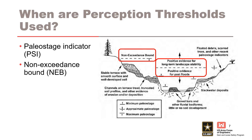In USACE and USBR, paleoflood studies are routinely performed for higher level dam safety studies. The analytical paleoflood analysis approach uses field identification of geologic and geomorphic evidence of large past floods. The graphic shown here provides examples of features commonly used in paleoflood analyses to estimate or constrain flood stages. As discussed in the previous lecture, when positive evidence of a large prehistoric flood is discovered, it is called a paleostage indicator, or PSI. Flow estimates associated with a paleostage indicator are typically modeled in RMC Best Fit as interval data.